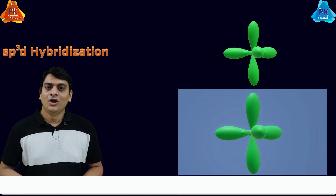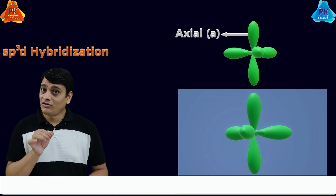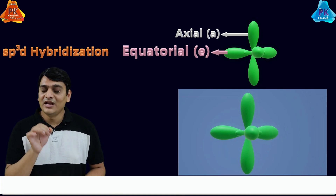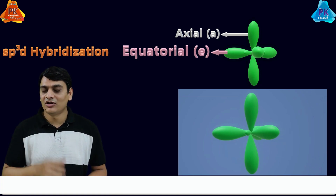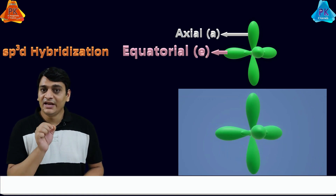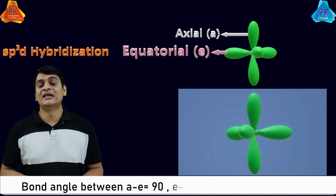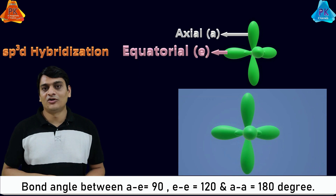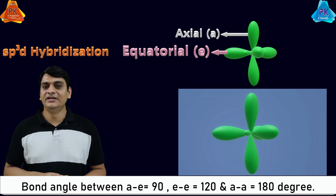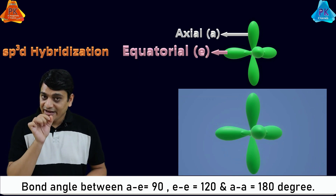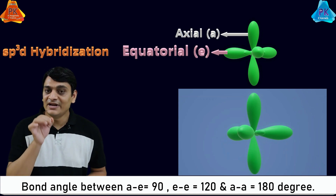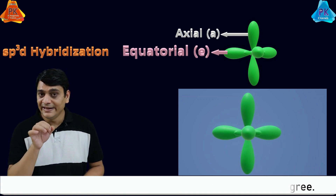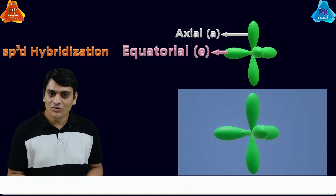The horizontal orbitals are known as axial orbitals and the vertical orbitals are known as equatorial orbitals. The angle between axial and equatorial orbitals is 90°, the angle between equatorial-equatorial orbitals is 120°, and the angle between axial-axial orbitals is 180°, where A represents axial and E represents equatorial orbitals.